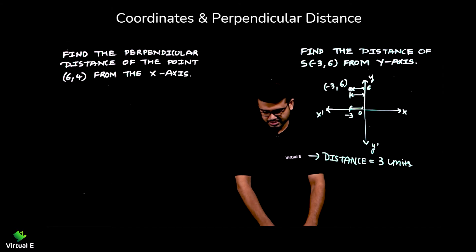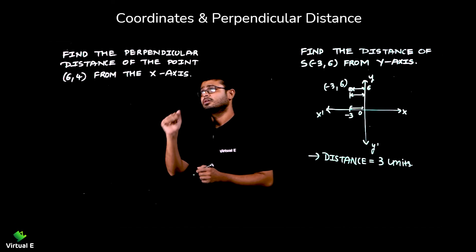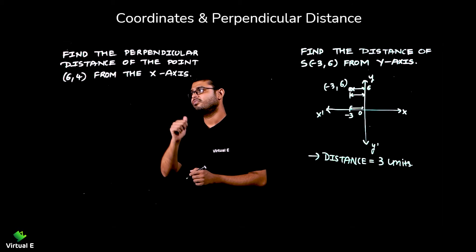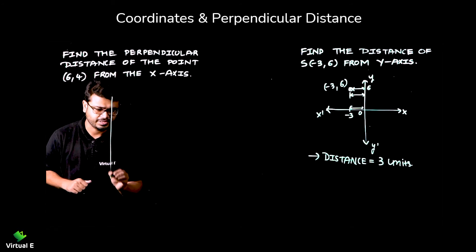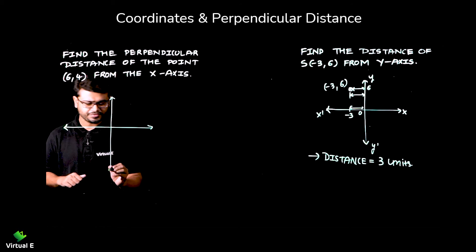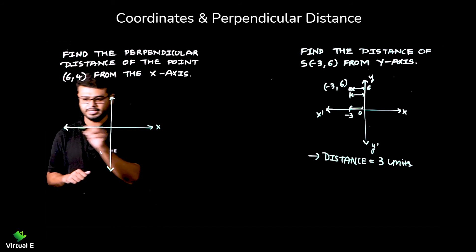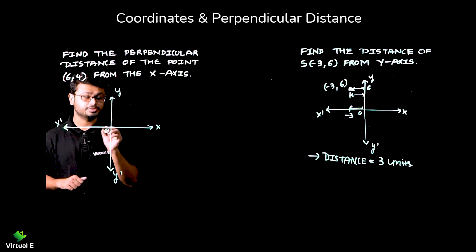Let's do the next question. Similarly, find the perpendicular distance of the point (6, 4) from the x-axis. So we need to find the perpendicular distance from the x-axis. First of all, let's locate the point x, x-dash, y, y-dash and the origin.